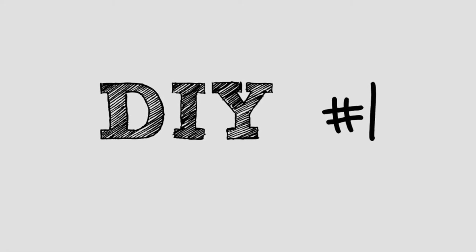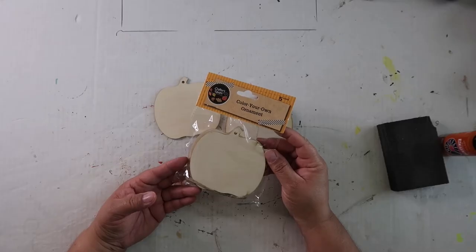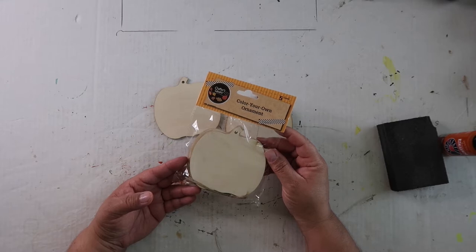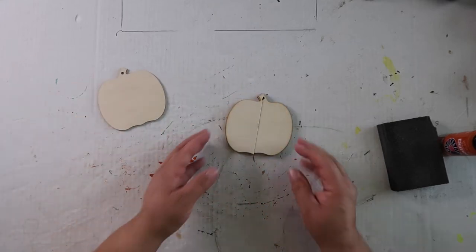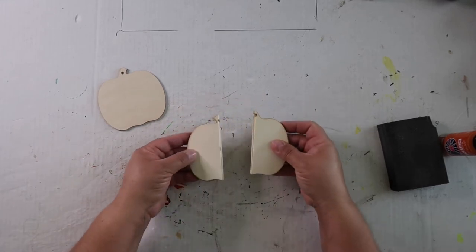DIY number one: To make this 3D pumpkin you're going to need this five pack of Crafter Square color your own ornament in the shape of a pumpkin. You're only going to use four of them, so set one aside and cut these other three in half.